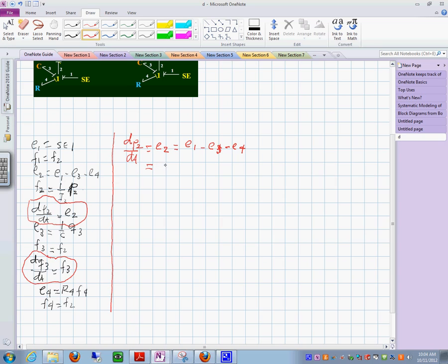e sub 1 is SE1. And what is e sub 3? I come in here. It says 1 over c times q sub 3. And what is e sub 4? It's r sub 4 times f sub 4. So, I keep substituting what I have on the left to reduce to a simple expression. That's what I am after. 1 over c. In terms of the state variables and the inputs. The state variables are the p's and q's.